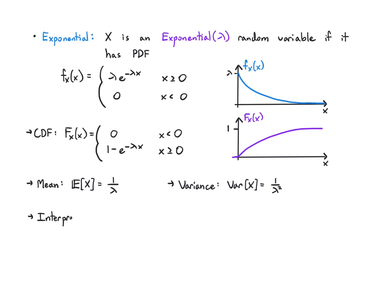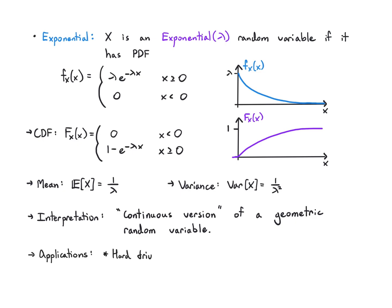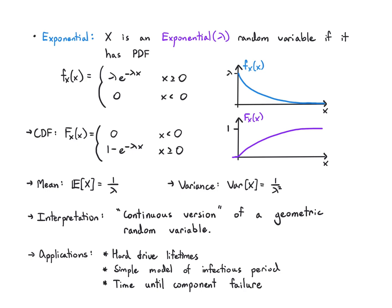You can think of this as a continuous version of a geometric random variable. The geometric was like waiting for the first thing to happen, counting the number of attempts; here it's looking at the continuous time before an event happens. Applications include hard drive lifetimes, simple models of an infectious period for a disease, or the time until a component in a system fails. It has very similar properties to the geometric distribution.